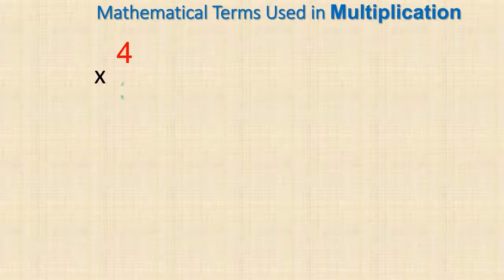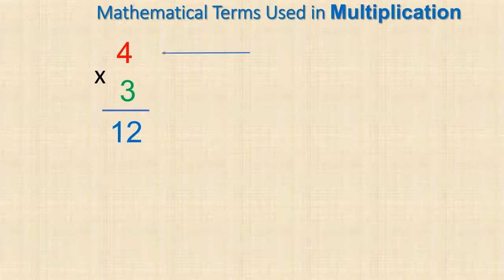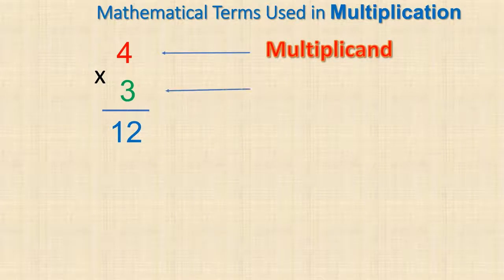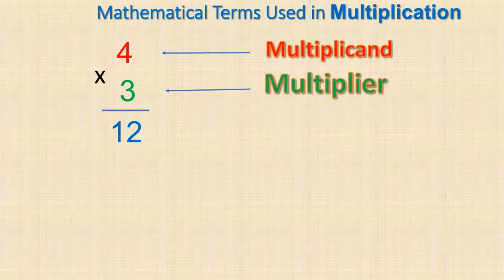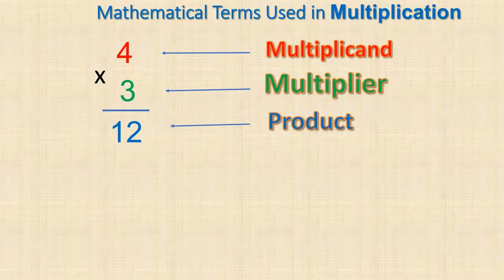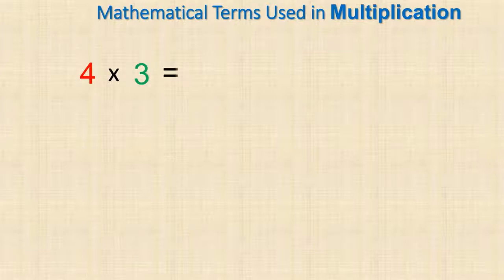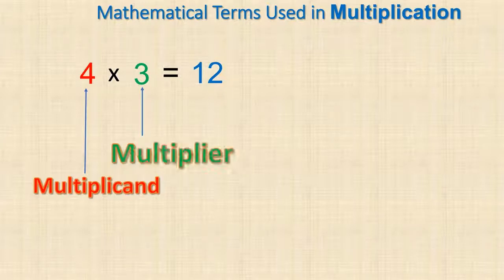Then we have multiplication. What are the mathematical terms used in multiplication? If we have four times three, which gives you twelve, we call four the multiplicand and three the multiplier. The number you multiply to the first number is the multiplier, and the answer to that multiplication is what we call the product. Written in horizontal form, four is the multiplicand, three is the multiplier, and twelve is the product.